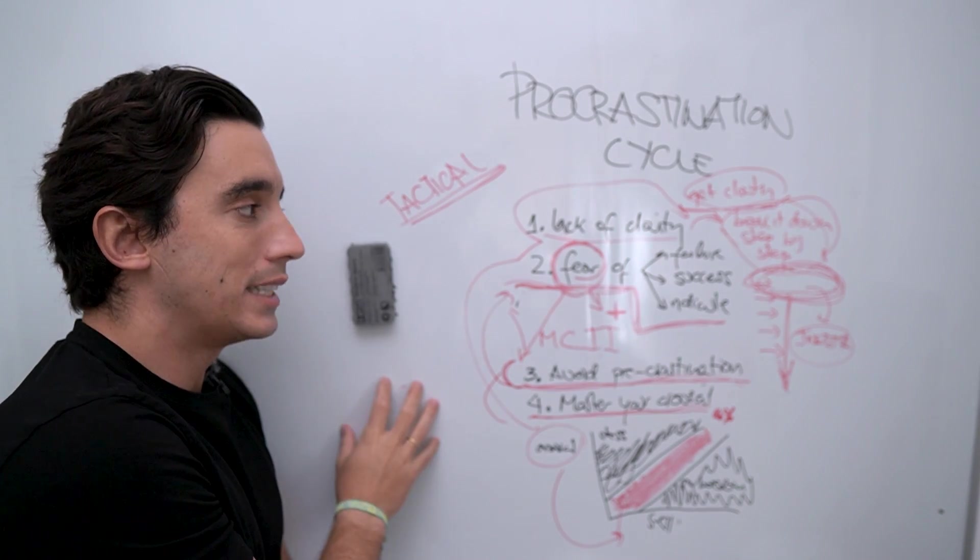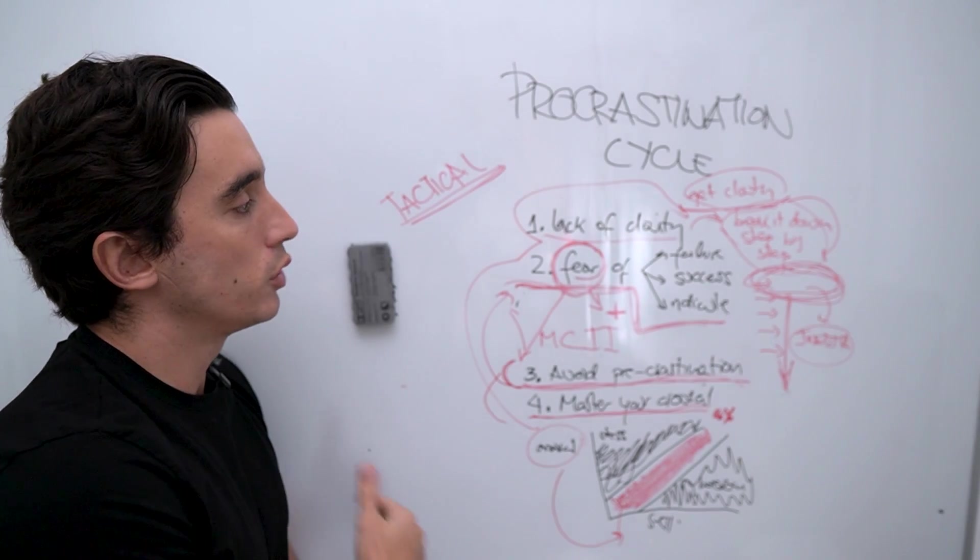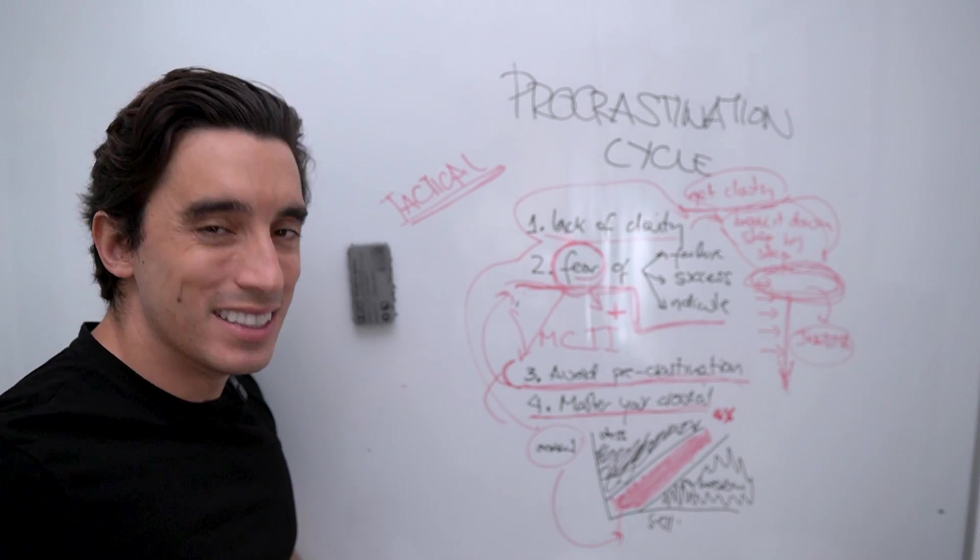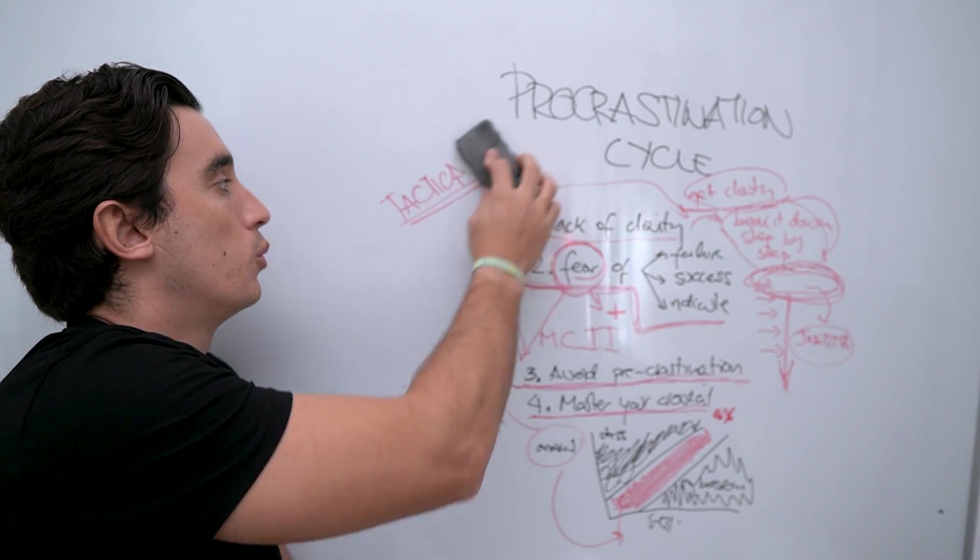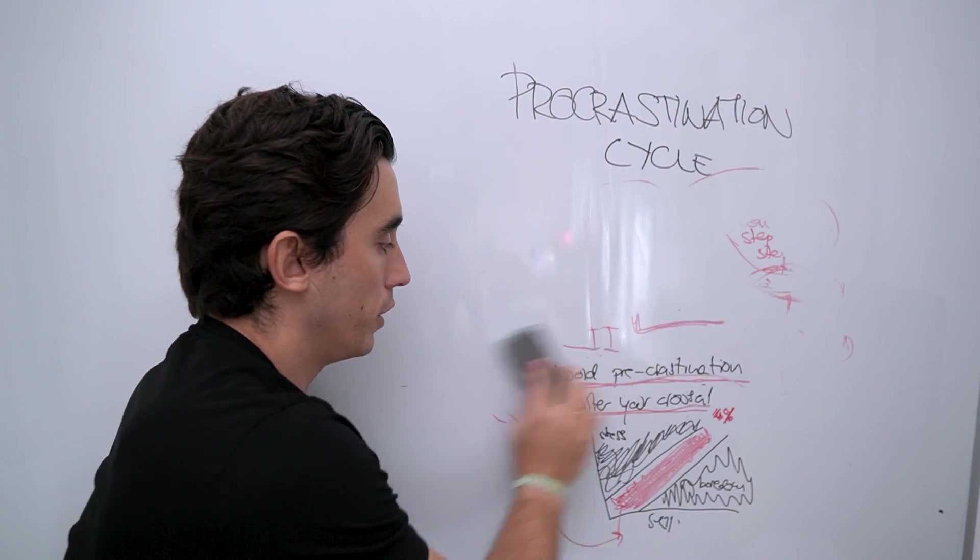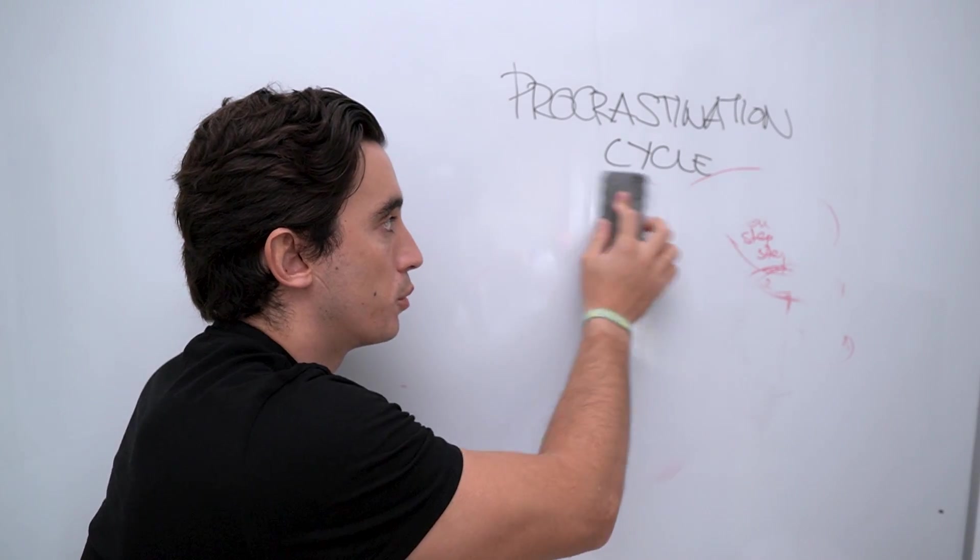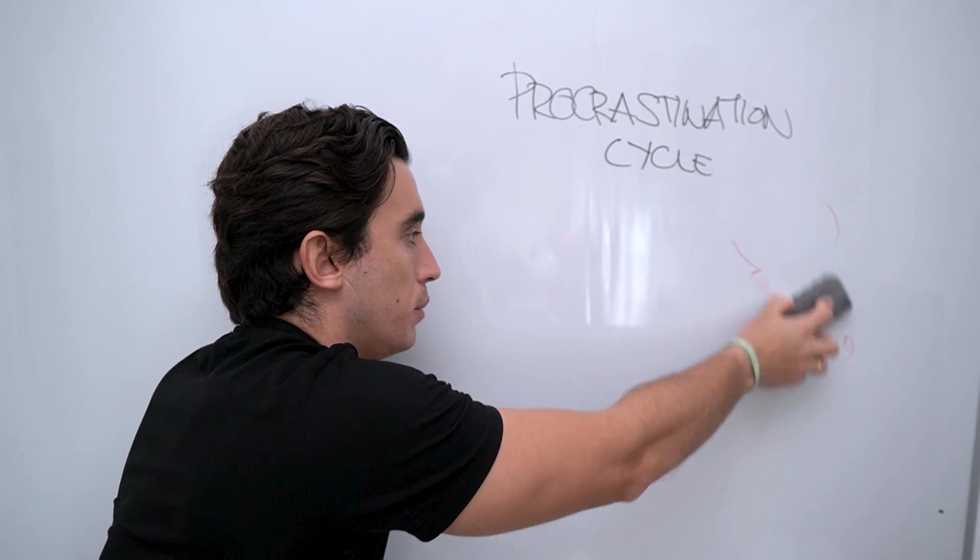Now, this will work tactically, but in order to eliminate it completely from your life, so that you don't even know what procrastination is, right, because you forgot about it, we have to train holistically. And this is the final point of the video. The more you optimize your performance across every pillar that affects it, the less procrastination you will have.